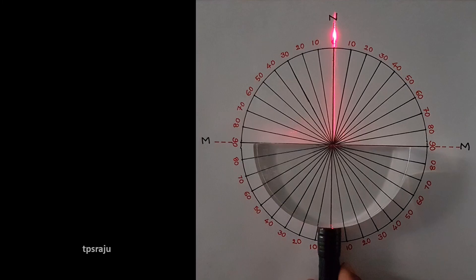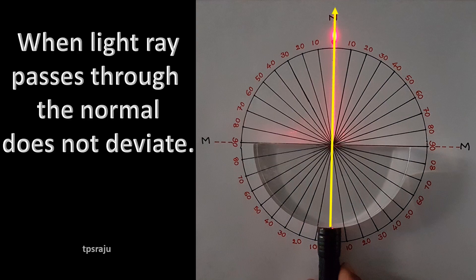Once again we will understand about critical angle and total internal reflection by using images of this activity. When light ray passes through the normal does not deviate.